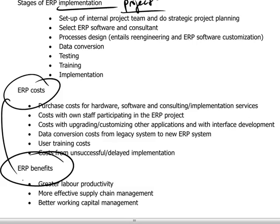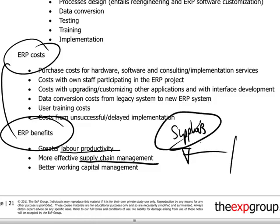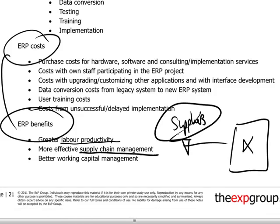There are a variety of hoped-for benefits that have to be realized: greater productivity, for example, and more effective supply chain management. This extends even outside the company towards suppliers, who may be expected to adopt an open-book policy towards a company that serves as their customer, so that the company understands what to expect from its suppliers in terms of performance.